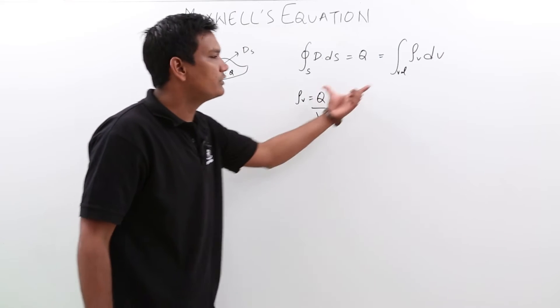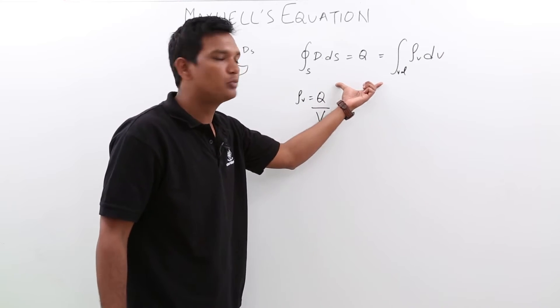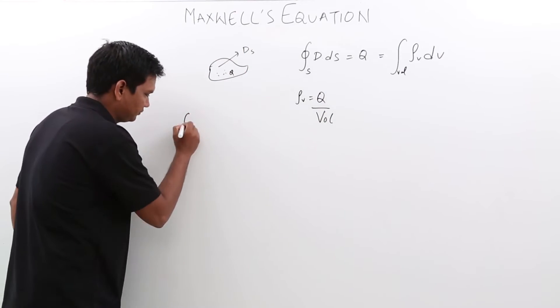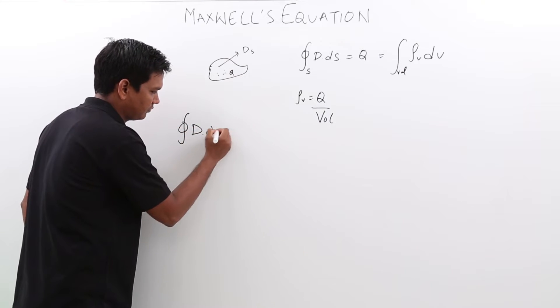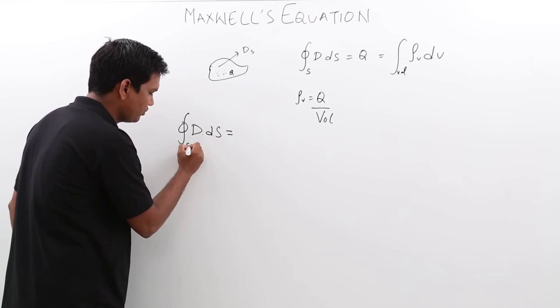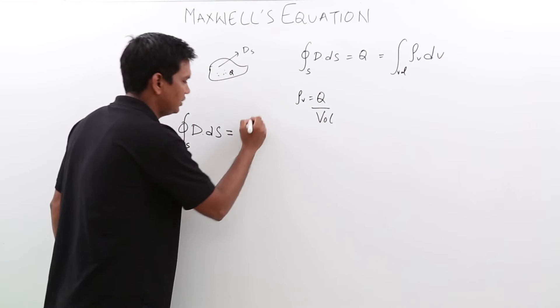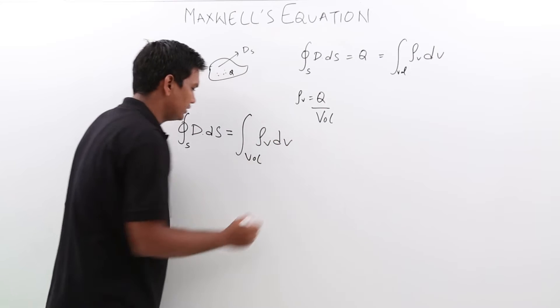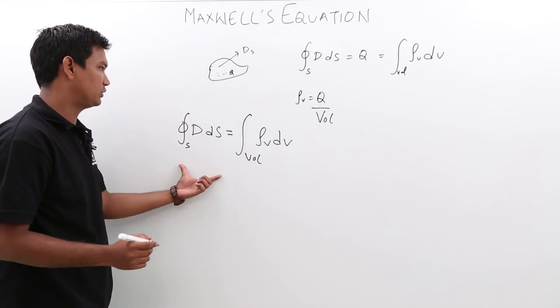This we have already seen while proving Gauss law. Now, the integral of D dot dS over the closed surface equals the integral of rho_v dV over the volume. This is the first Maxwell equation.